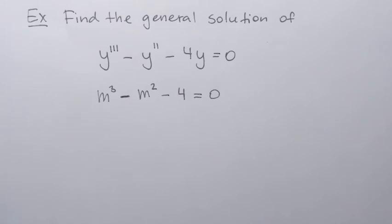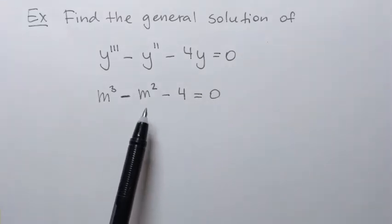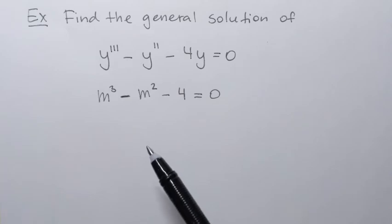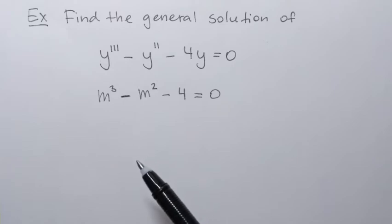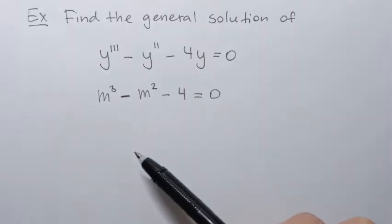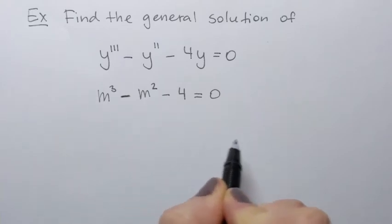The first theorem is called the Rational Root Theorem, and it goes like this. It says that if a polynomial equation has a rational root — in other words, a rational solution — it means it's going to be a real solution that can be put in fraction form. So it can be a fraction or a whole number, because a whole number can always be put in fraction form. So if a polynomial equation has a rational root, it's going to come from the following list.